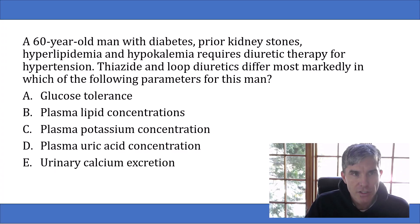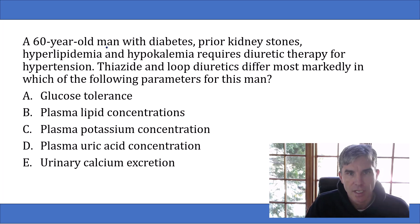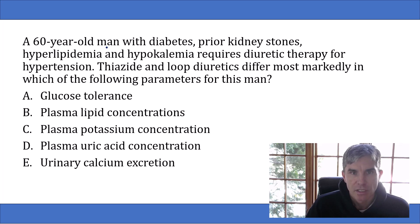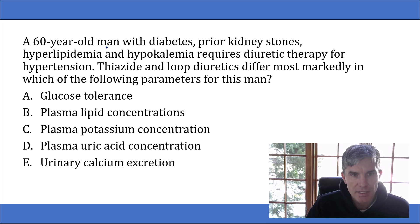The question states that a 60-year-old man with diabetes, prior kidney stones, hyperlipidemia, and hypokalemia requires diuretic therapy for hypertension. Thiazide and loop diuretics differ most markedly in which of the following parameters for this man? The answer choices are: glucose tolerance, plasma lipid concentrations, plasma potassium concentration, plasma uric acid concentration, or urinary calcium excretion.